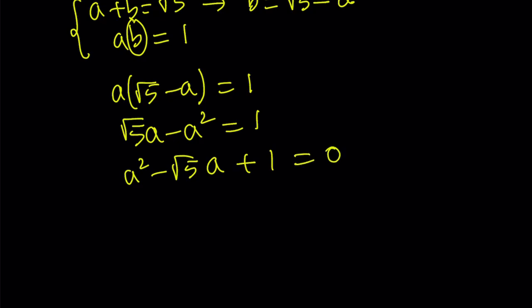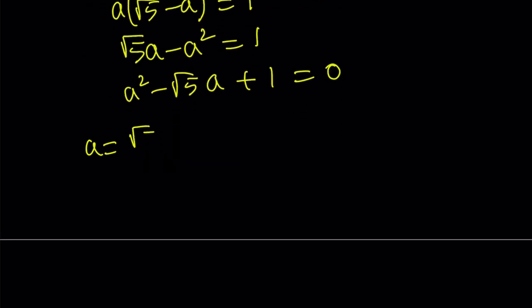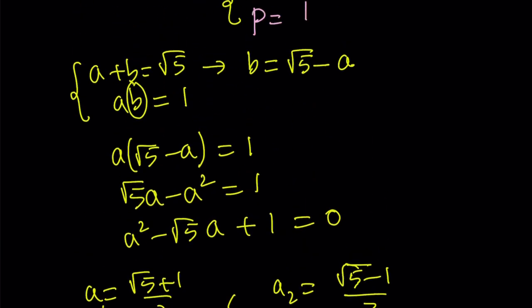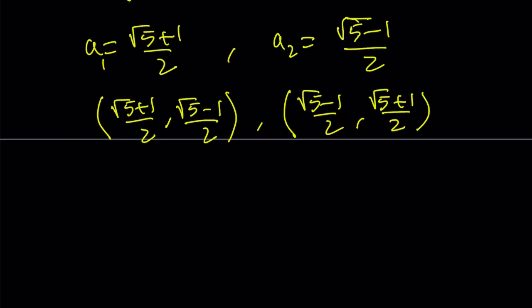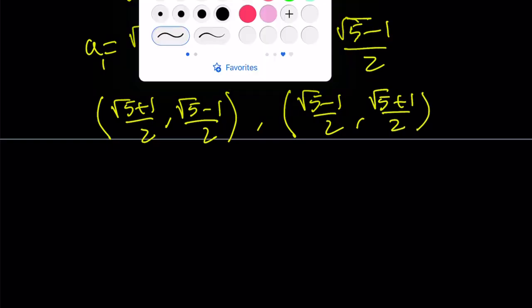This equation is very easy to solve with the quadratic formula. The a values are going to be (√5 + 1)/2 and (√5 - 1)/2. The b values are going to be switched around. Therefore, our solution set is (√5 + 1)/2—the golden ratio—and (√5 - 1)/2, or it could be the other way around. There are two solutions to this equation. Let's take a look at the second method.